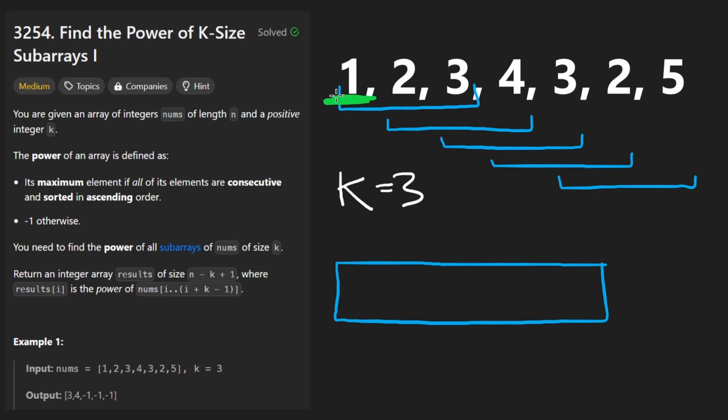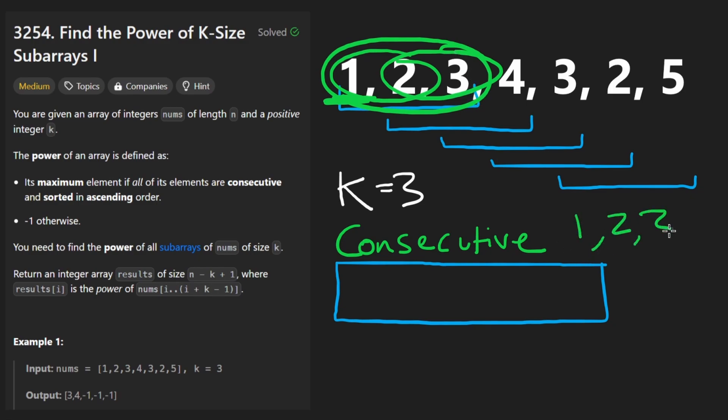So basically only these five elements have a window starting at them. For this particular window, since it starts at this position, we're going to put a value over here. We're going to take the max value of the window, which is 3 in this example, and put it here. But we're only going to do that if the elements in the window are in consecutive order. Consecutive basically means that they're sorted in ascending order, and the difference between each of the adjacent values is 1. Like obviously 1, 2, 3 is consecutive. We didn't have to start at 1. Maybe we could start at 2. 2, 3, 4, that's also consecutive.